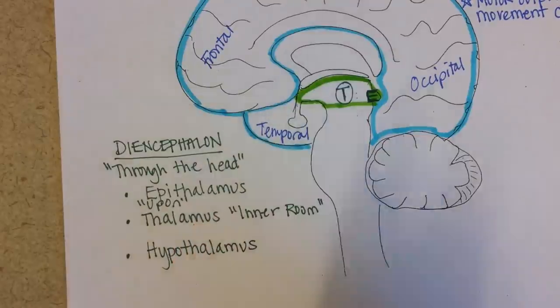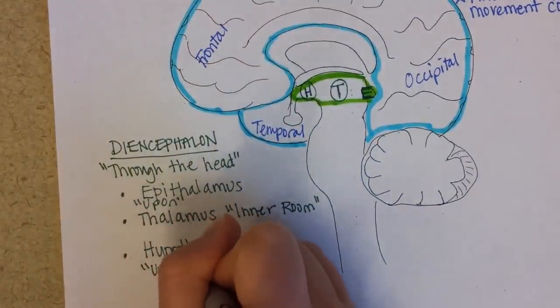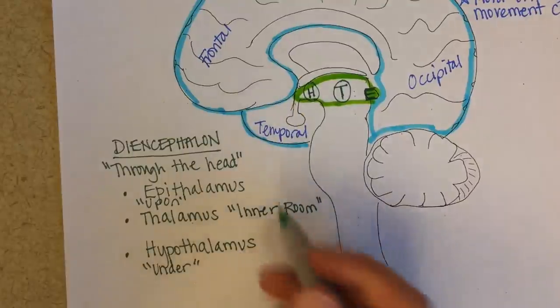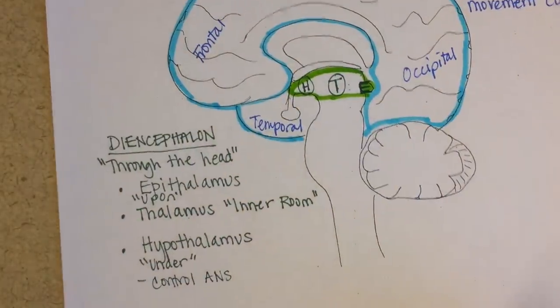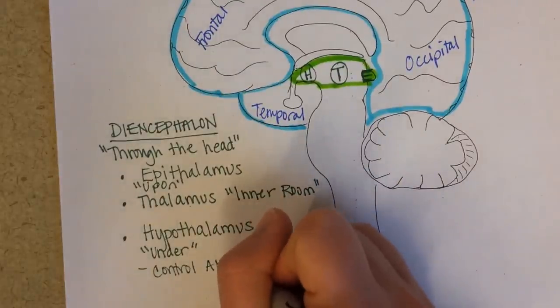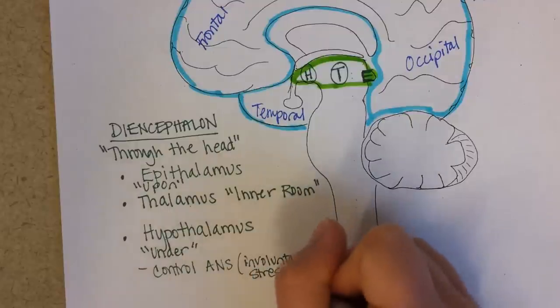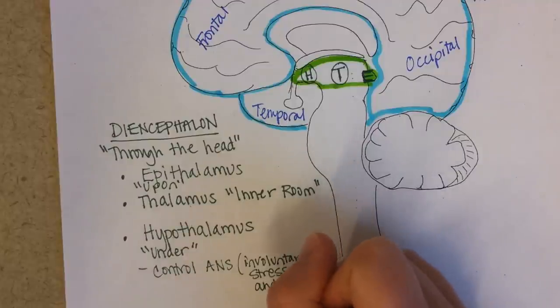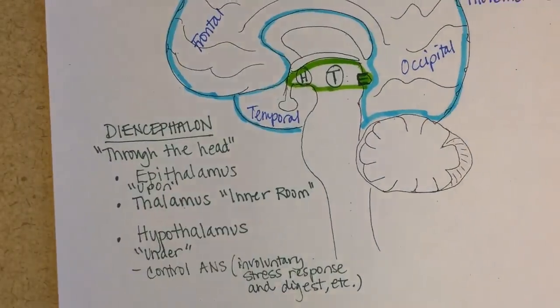And then the hypothalamus. Hypo means below or under. That is very important in controlling the autonomic nervous system. In other words, it's going to control involuntary stress response and things like rest and digest, and many others.